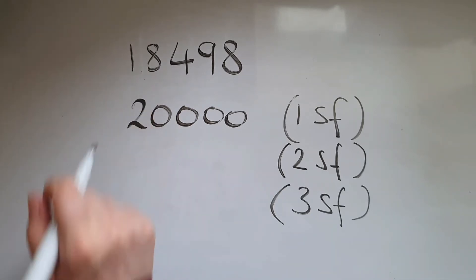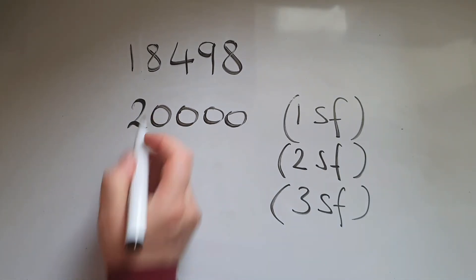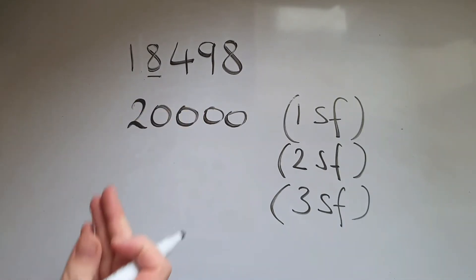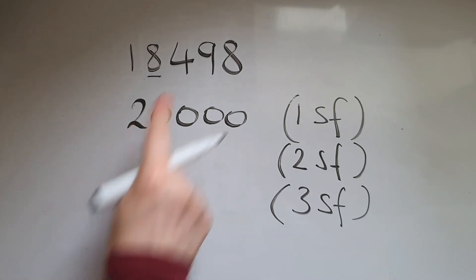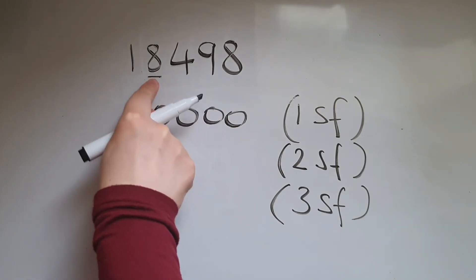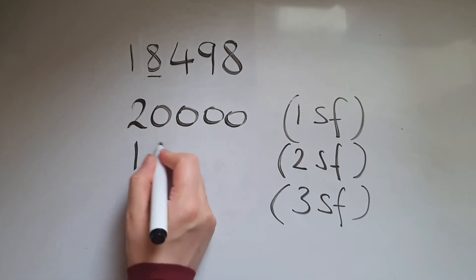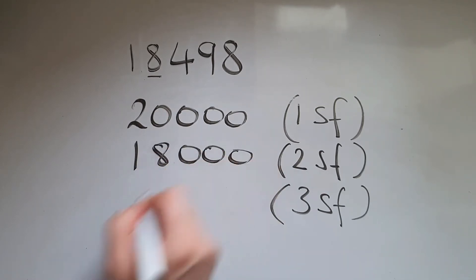Rounding the same number to two significant figures means rounding it to the nearest thousand. So looking at 4 means we're going to round this down. So we'll have 18,000.